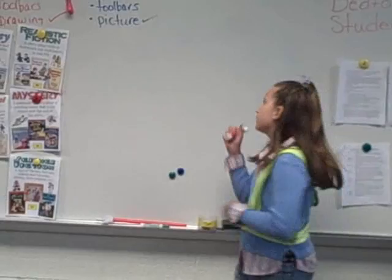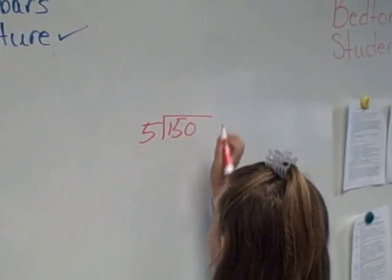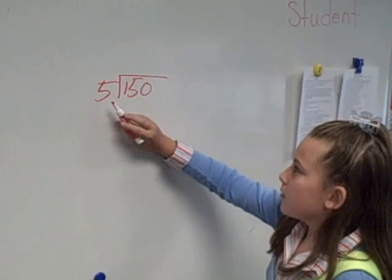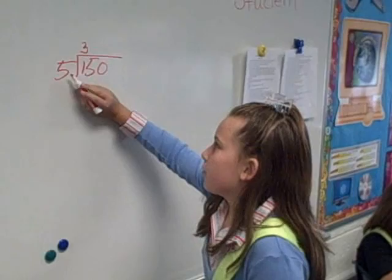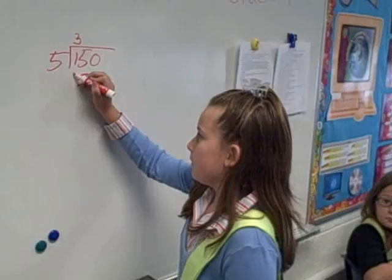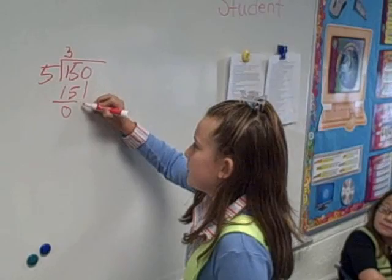Casey, choose a problem for Haley to solve. 150 divided by 5. Well, how many times does 5 go into 1? You can't do that. So, how many times does 5 go into 15? 3. So, you take the 3 up there, and 3 times 5 equals 15, so you put 15 there. And 15 minus 15 is 0, and you bring down the 0.